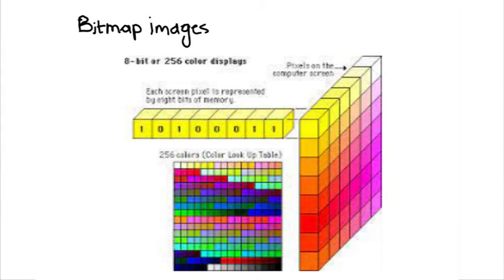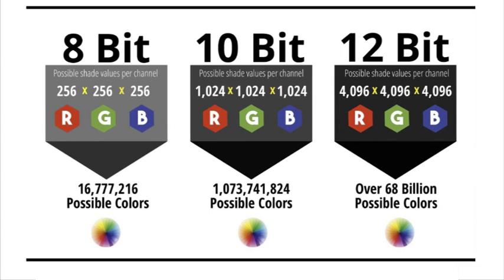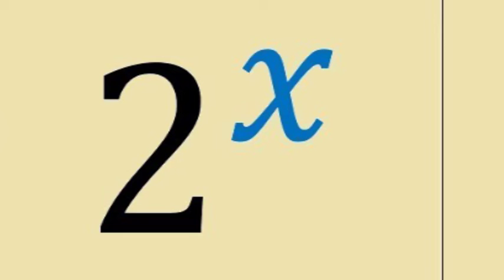The number of bits used to represent each color is called the color depth. An 8-bit color depth means that each pixel can be one of 256 colors. Modern computers have a 24-bit color depth, which means over 16 million different colors can be represented. As a generalization, 2 to the power of x colors can be represented using x bits.